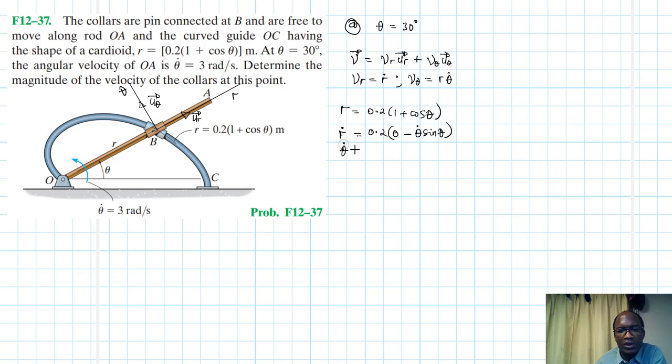Theta dot is given as θ̇ = 3 rad/s. Let's move on.